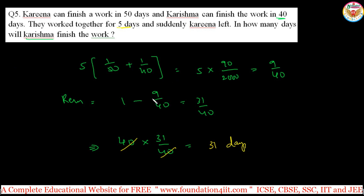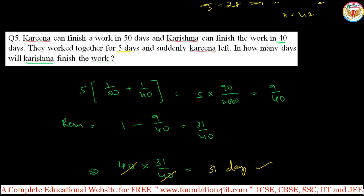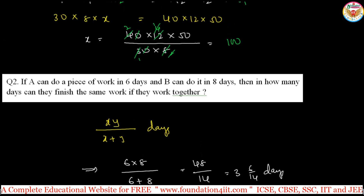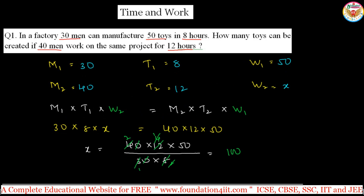So after finding the remaining work, multiply by the number of days the remaining person can do the full work, and you will get the answer. These are the basic problems you can use from this topic — time and work.